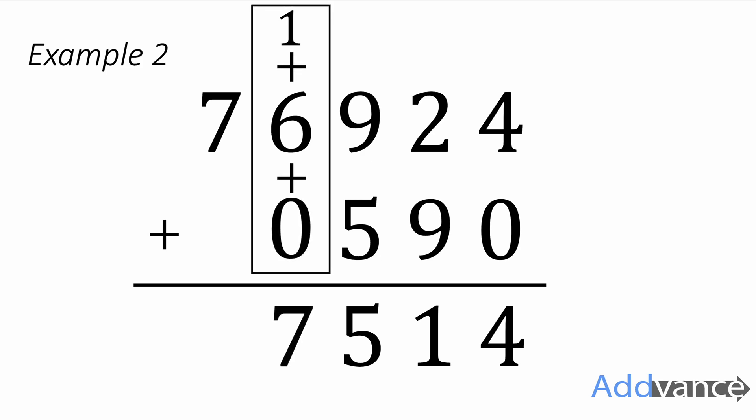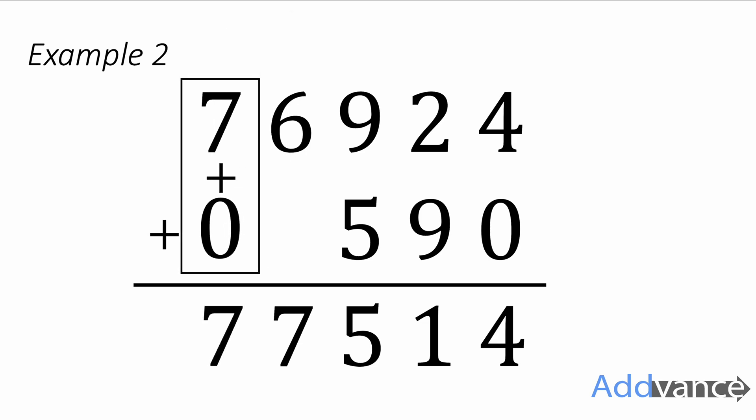One plus six is seven. We write the seven down there and then we've just got a seven here with an invisible zero. Seven plus zero is seven. The final answer is 77,514.